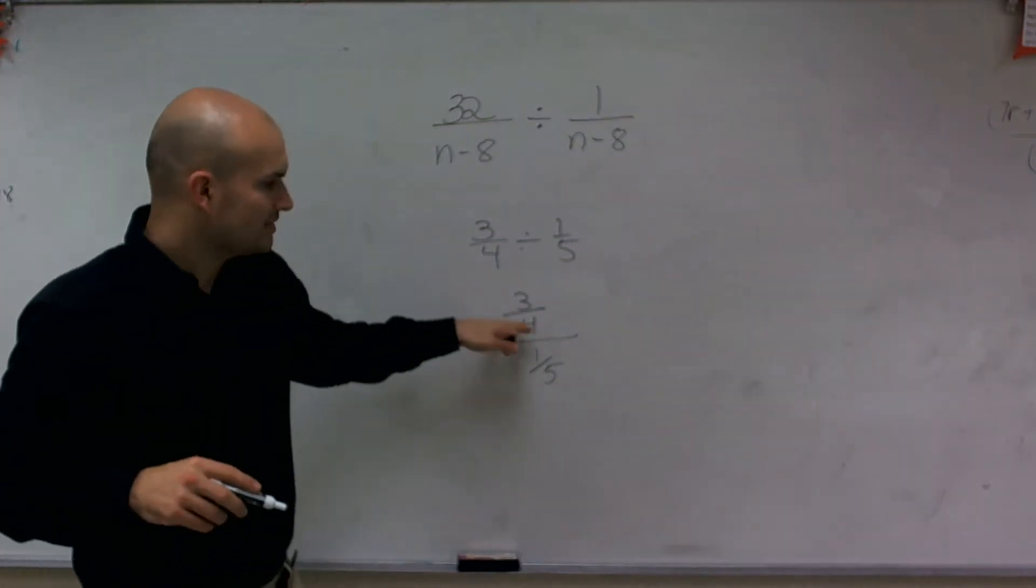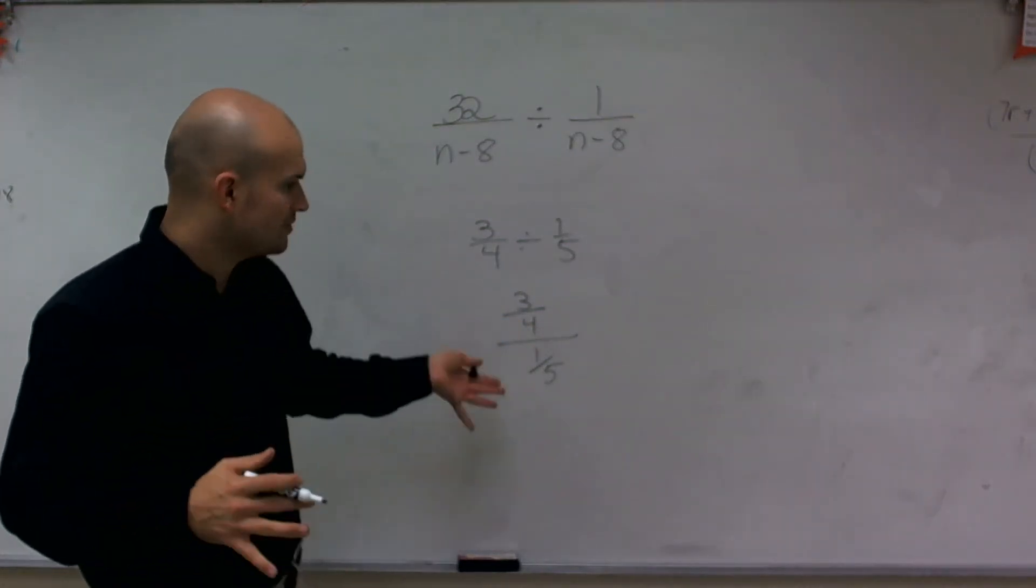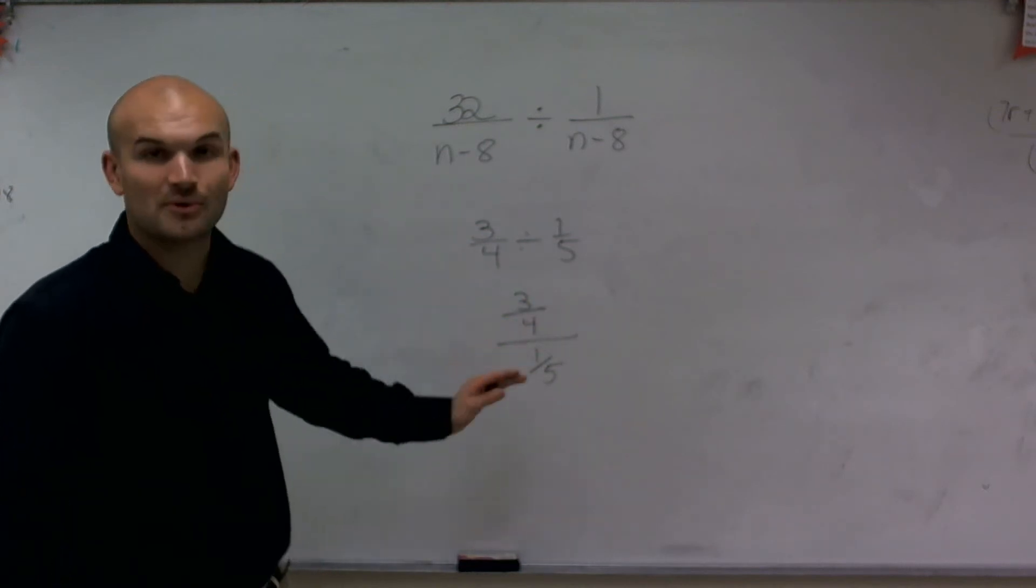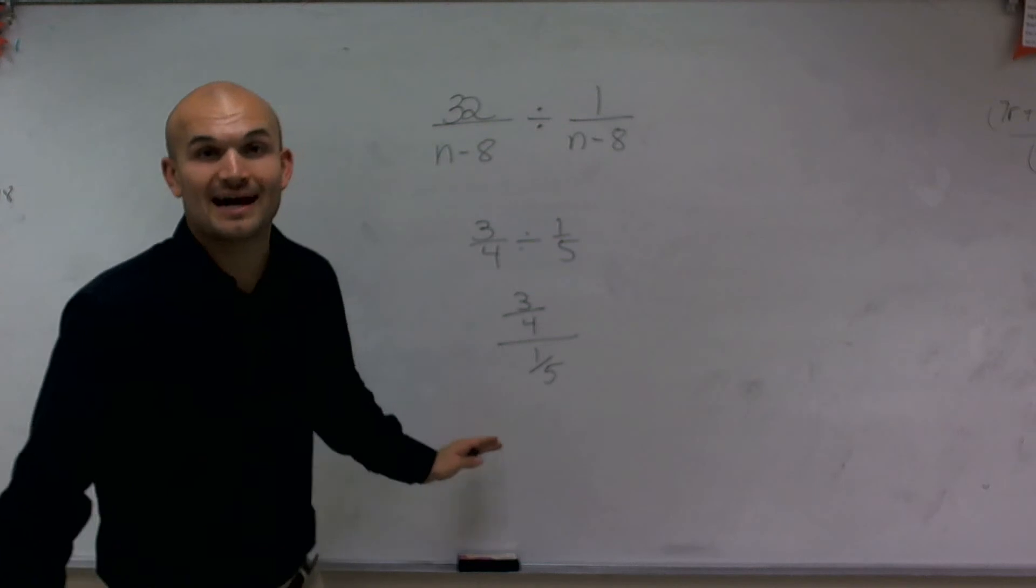And one thing when we're dividing fractions by fractions, one thing you always want to look at is, well, we can't divide a fraction by a fraction. It's like we have triple division going on here. It's kind of crazy.